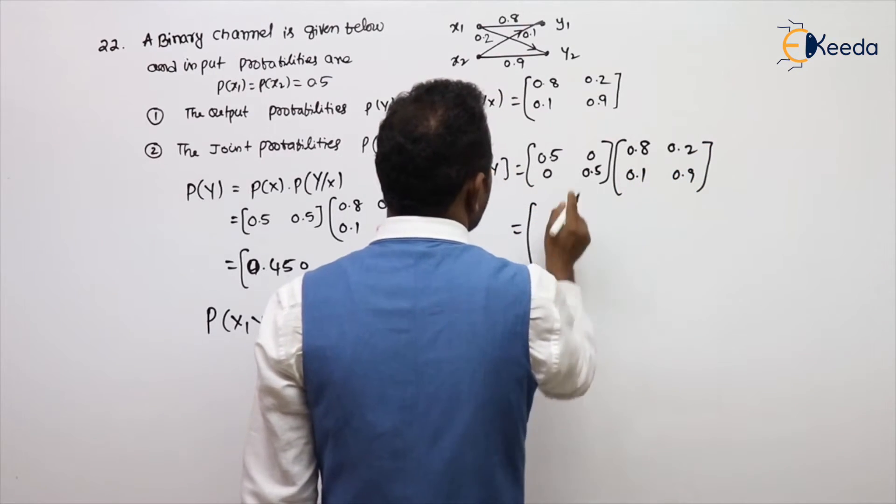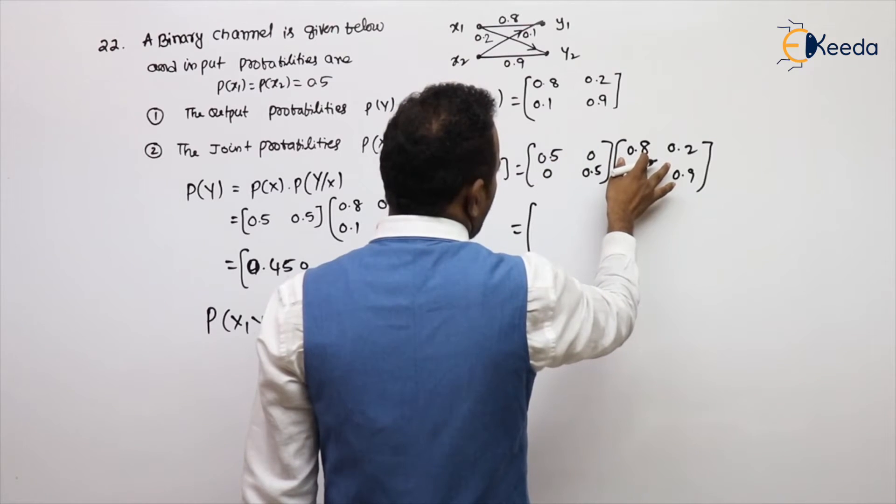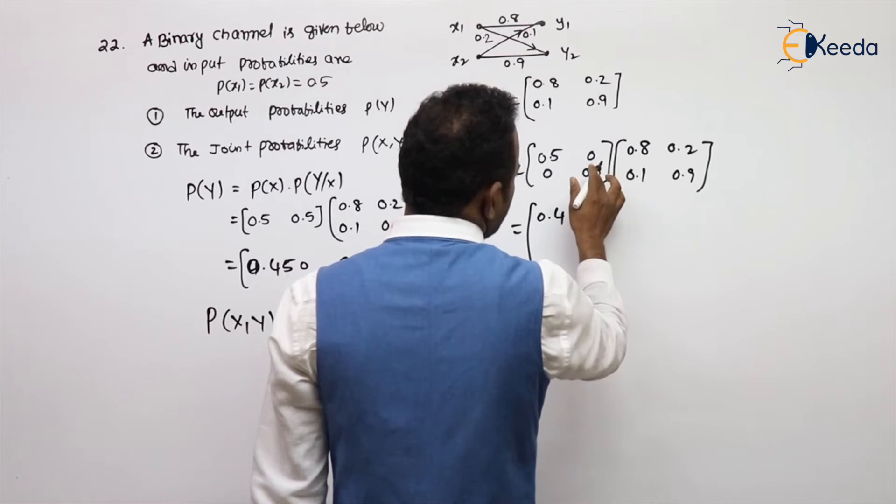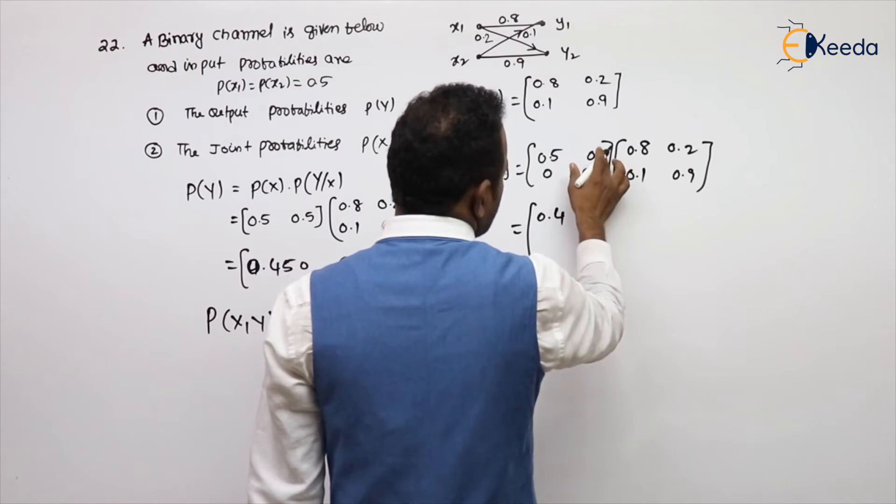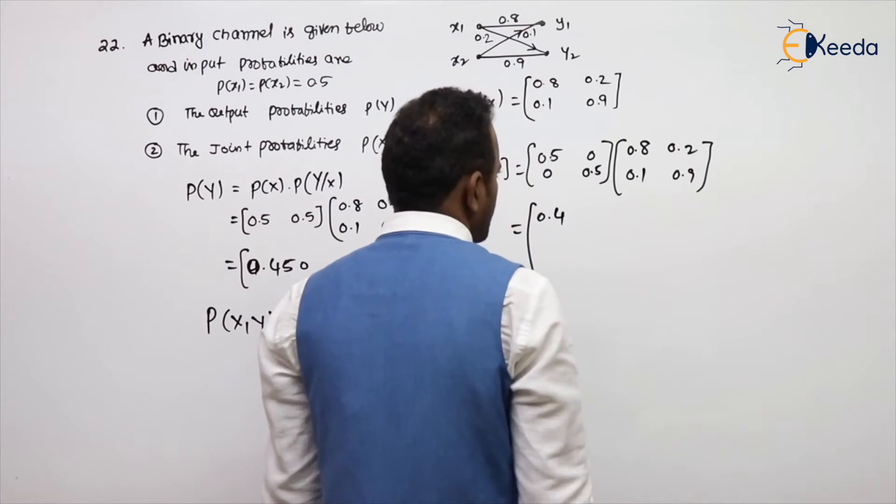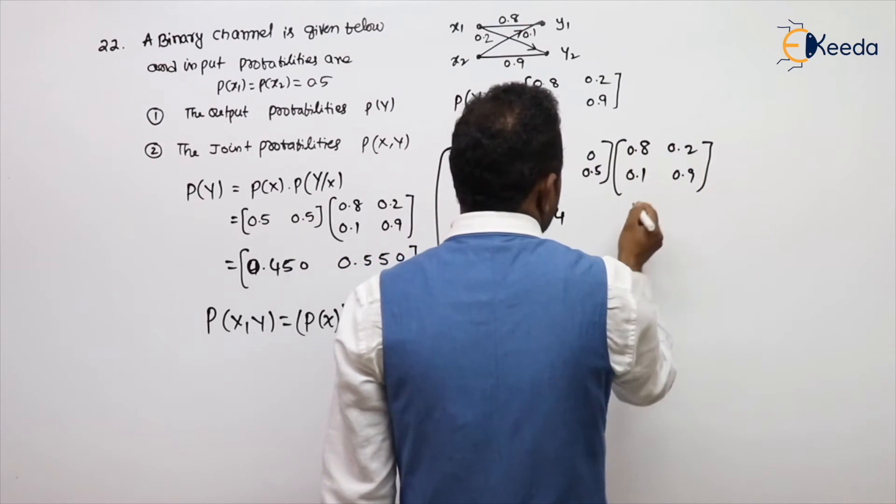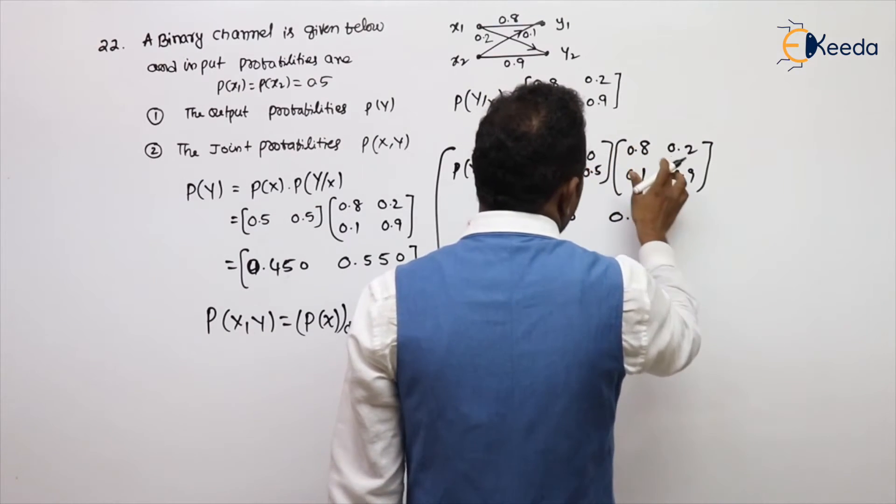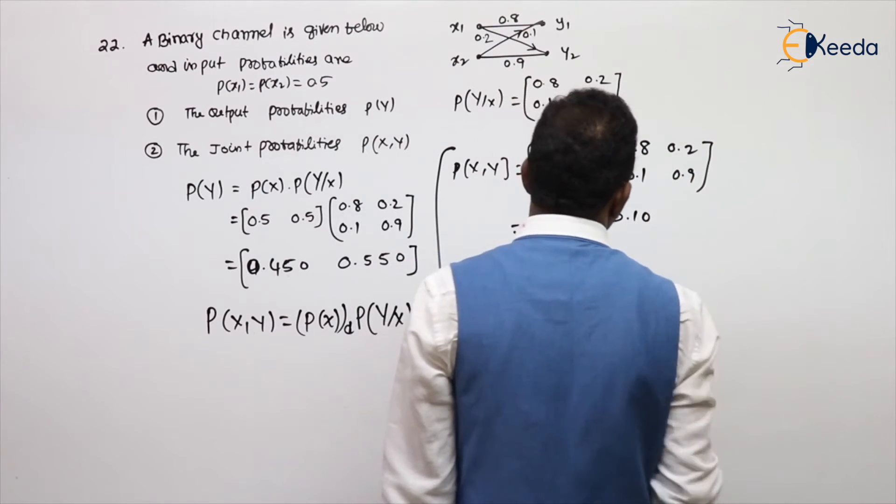Now multiply: 0.5 into 0.8, so 0.4. Next, 0 into 0.1, 0 leave it. Next, this into this, 0.10.